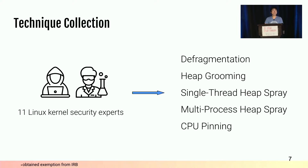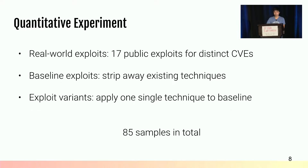For the first step, we interviewed 11 Linux kernel security experts and collected five exploitation stabilization techniques: defragmentation, heap grooming, heap spray, and CPU pinning. Since there are two kinds of implementation of heap spray, we regarded them as two different techniques. We then collected 17 public exploits and stripped away existing techniques employed in the exploits as the baseline exploits. We then applied one single technique from the collected technique set to each baseline exploit to form the exploit variants. In total, we obtained 85 samples.